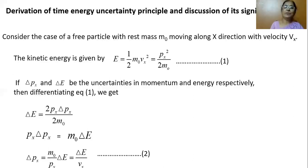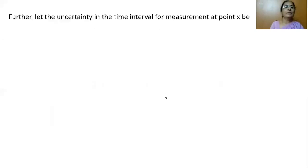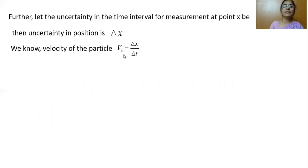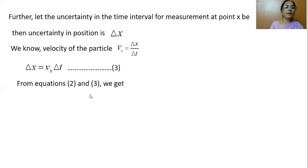Now substituting px as m0 vx, m0 cancels and we get delta px equal to delta E by vx. Further, let the uncertainty in the time interval for measurement be delta t. Then the uncertainty in position delta x can be found from the expression for velocity: vx equals delta x by delta t, so delta x equals vx times delta t. From these two equations, we can write delta x times delta px equals delta t times delta E.